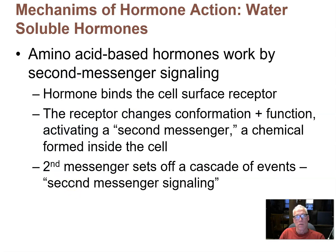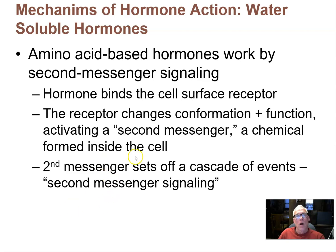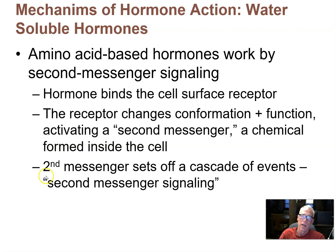Let's talk about how amino acid-based, water-soluble hormones activate their target cells. Amino acid-based hormones bind to cell surface receptors — they cannot cross the cell membrane because they're large, charged molecules. They bind to receptors on the surface, and those receptors then activate processes in the cell to produce another chemical within the cell called a second messenger, which carries on the signaling cascade within the cell.